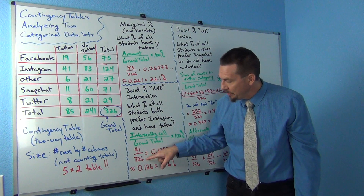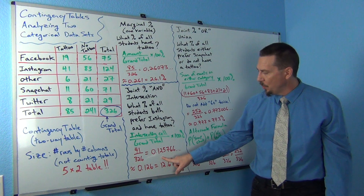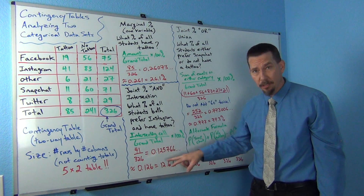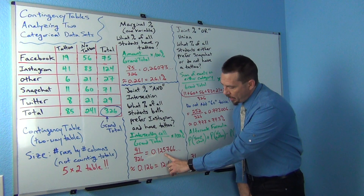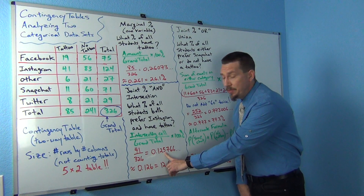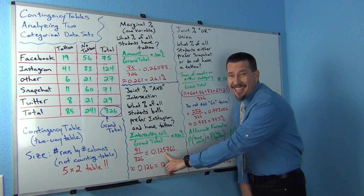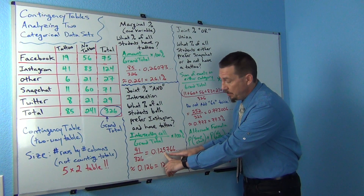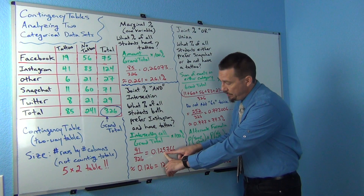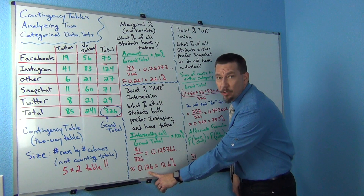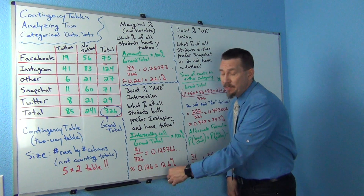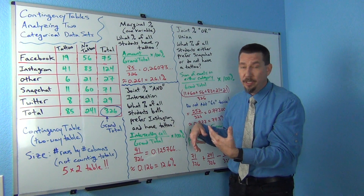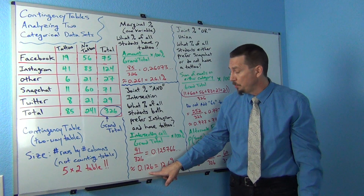So 41 divided by 326, and we get 0.125766, and it just keeps going. Remember, that's called the proportion. I'm going to round my answer to the third decimal to the right of the decimal point, so I really want to round to that 5. If I look to the number to the right of it, it's a 7, so that means I'm going to round up — add 1 to the 5 — and my approximate proportion would be 0.126.